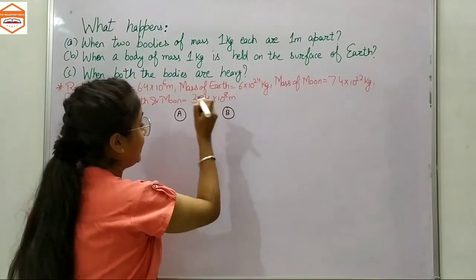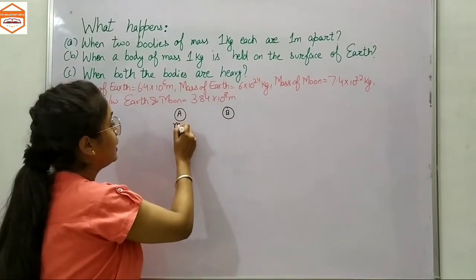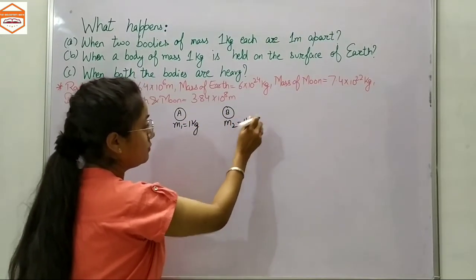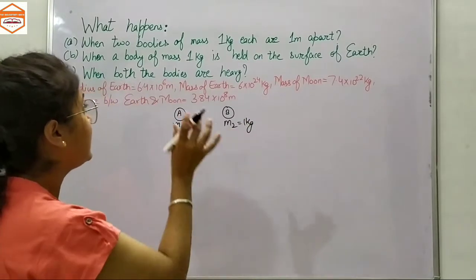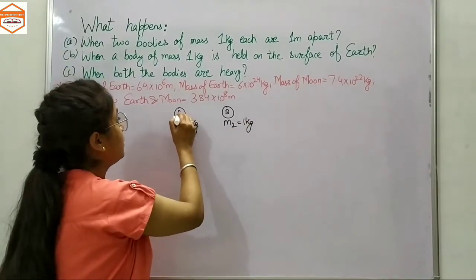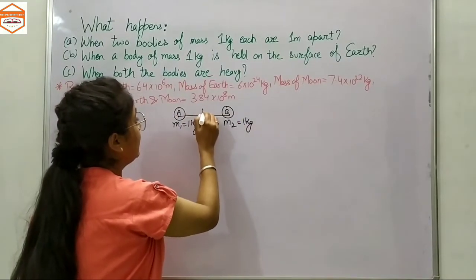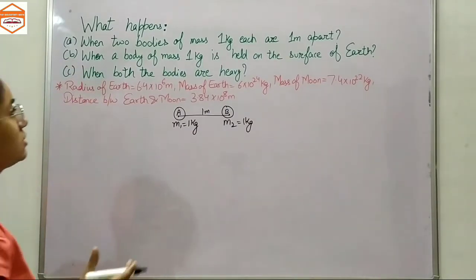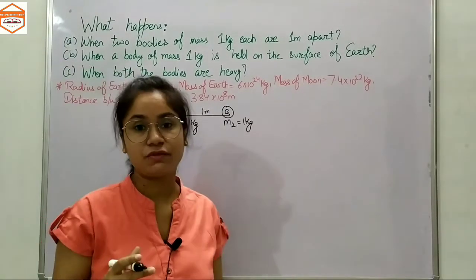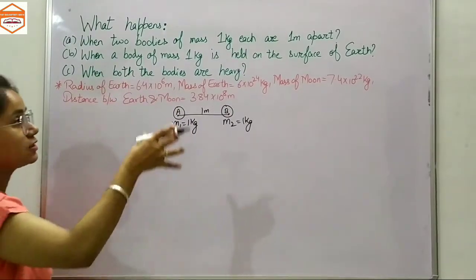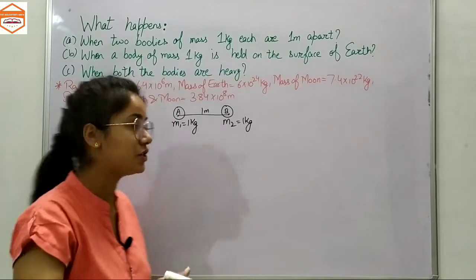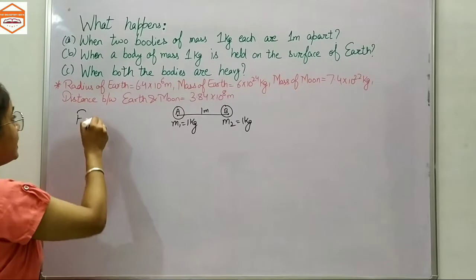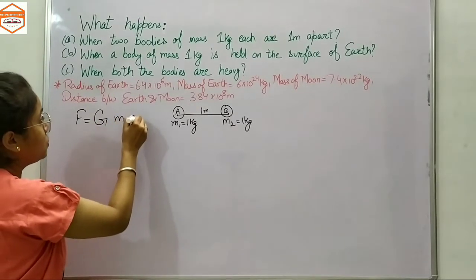We have two bodies — body A and body B. Body A has mass one kilogram and body B also has mass one kilogram. The distance between them is one meter, taken from their centers. This whole video is about the gravitational force of attraction.